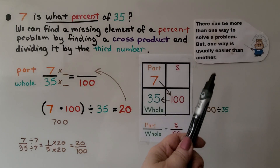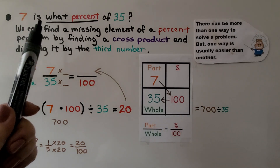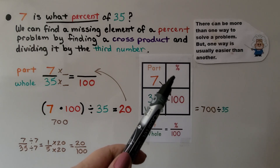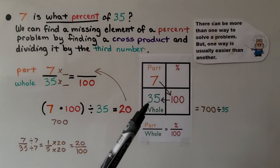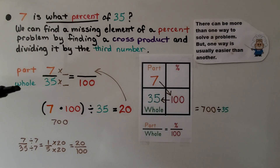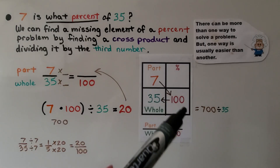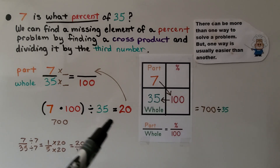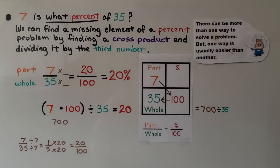There can be more than one way to solve a problem. Consider: 7 is what percent of 35? We need to find the percent. We can find a missing element in a percent problem by finding a cross product and dividing by the third number. 7 is the part, 35 is the whole, and we need the number over 100. We do 7 times 100, which is 700, and divide by the third number — the whole, 35 — and get 20. That means 7 is 20% of 35.